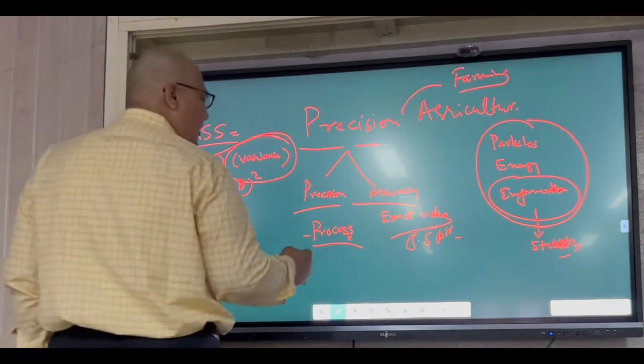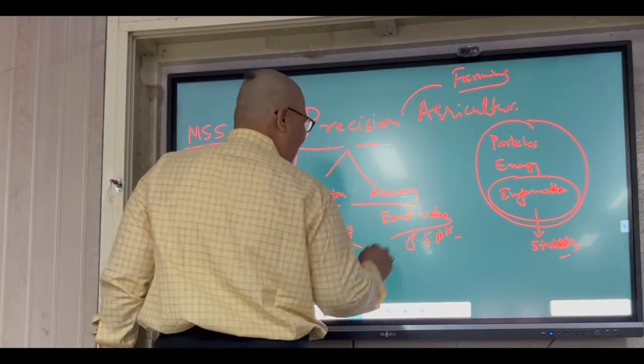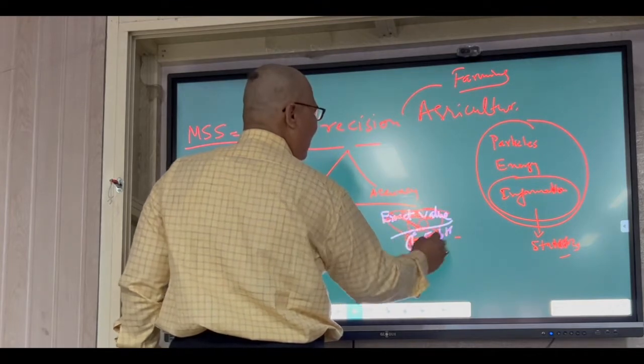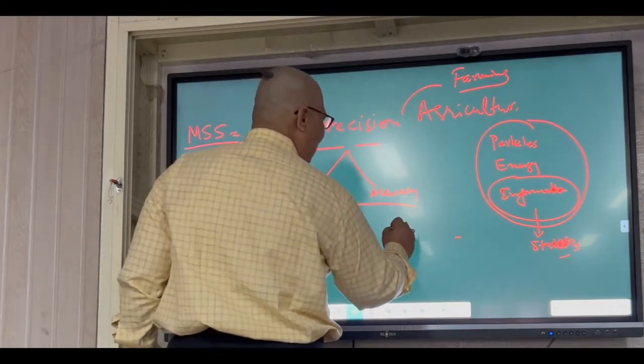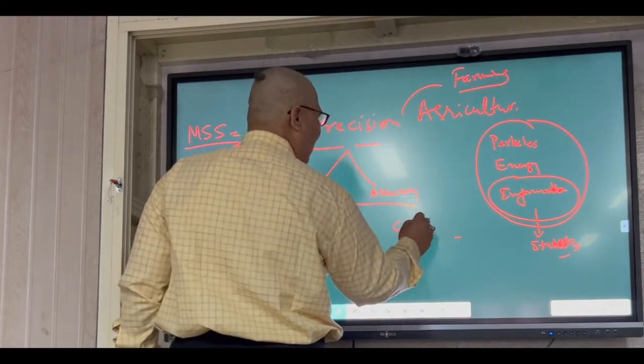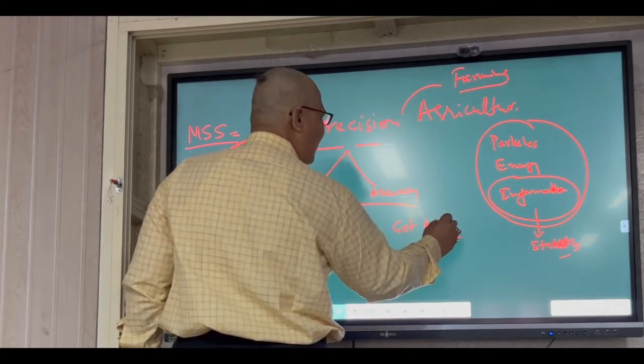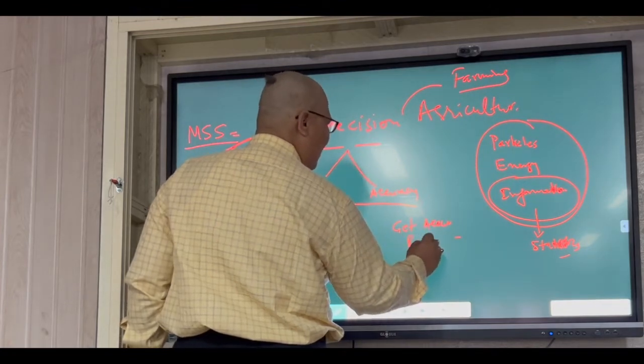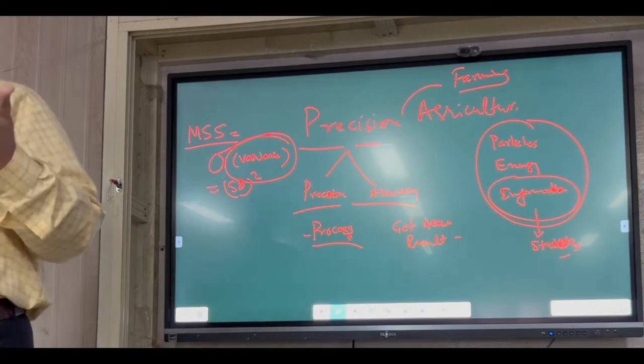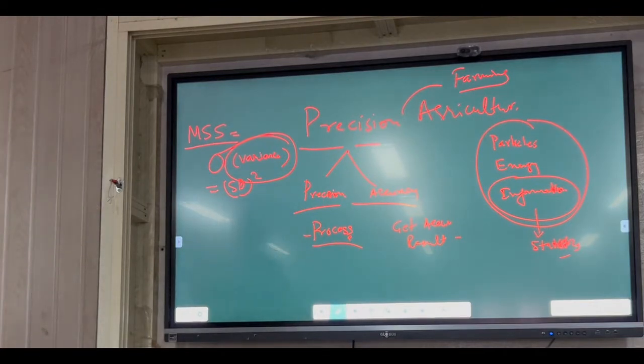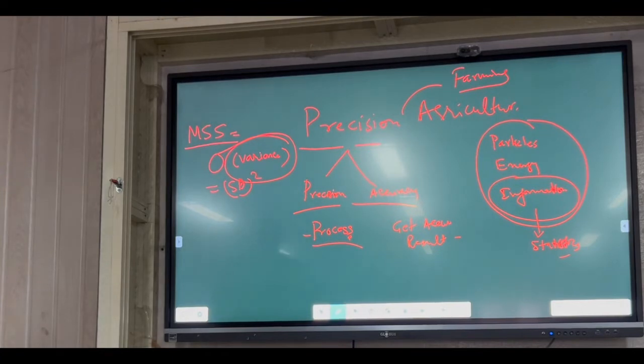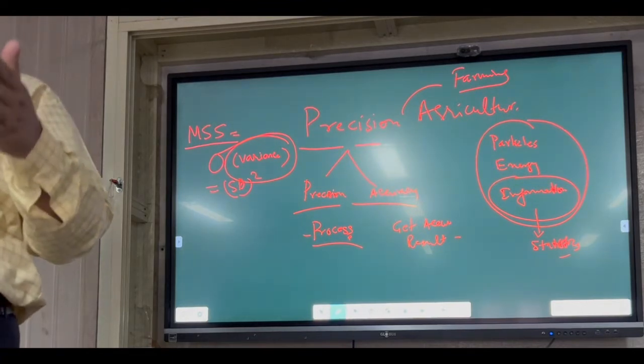Accuracy is what? Accuracy is the result of precision. It's not about closeness or anything like that. Accuracy is the result and precision is the process.